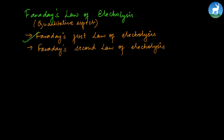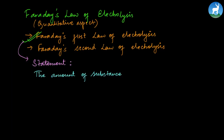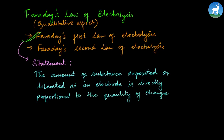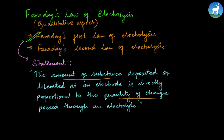Faraday's first law of electrolysis states that the amount of substance deposited or liberated at an electrode is directly proportional to the quantity of charge passed through an electrolyte. This means the amount of substance deposited is proportional to the quantity of charge passed.